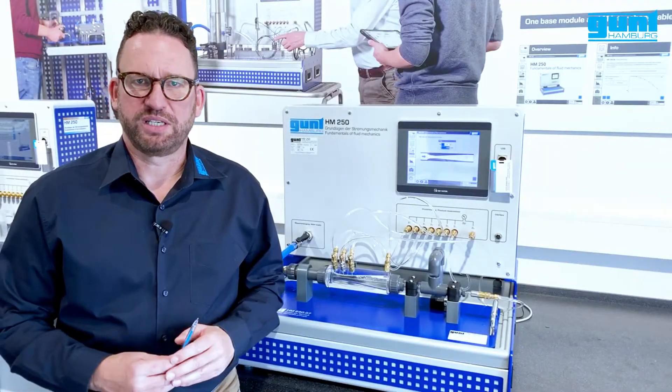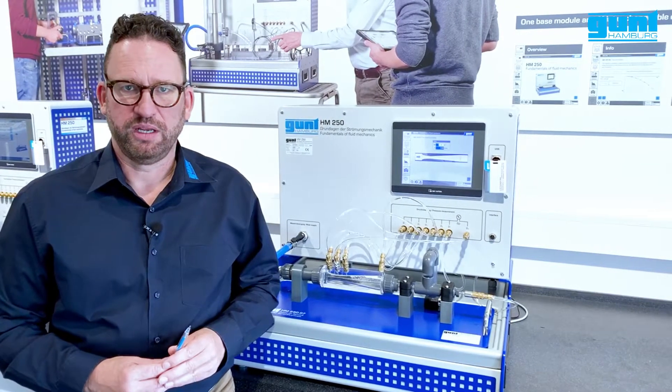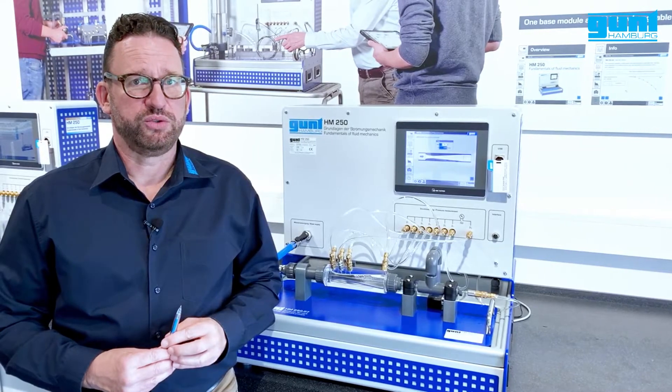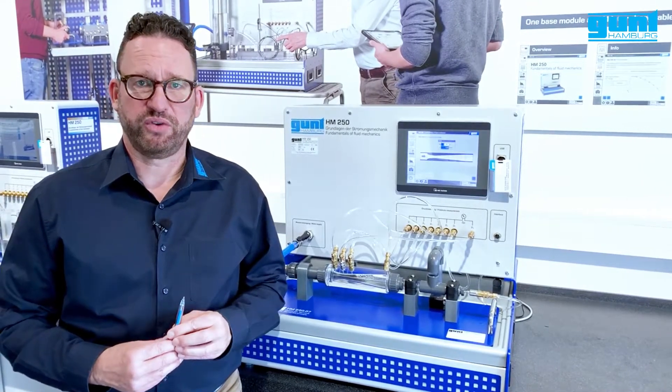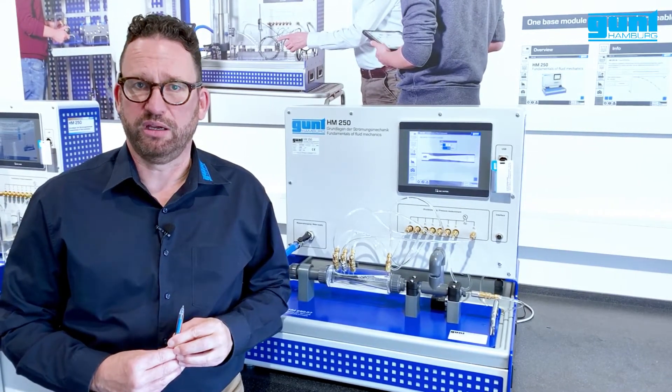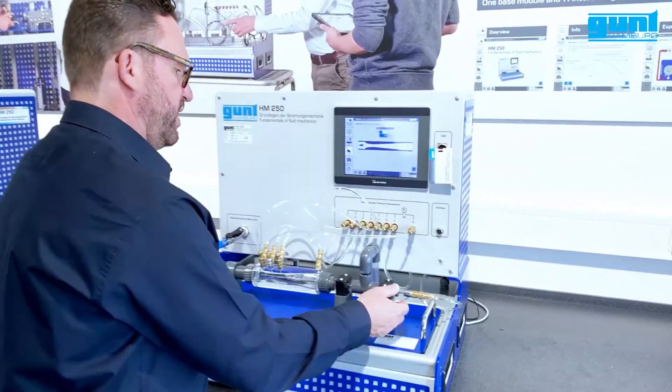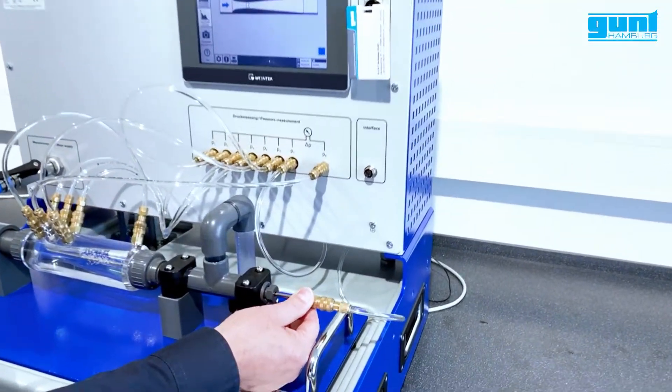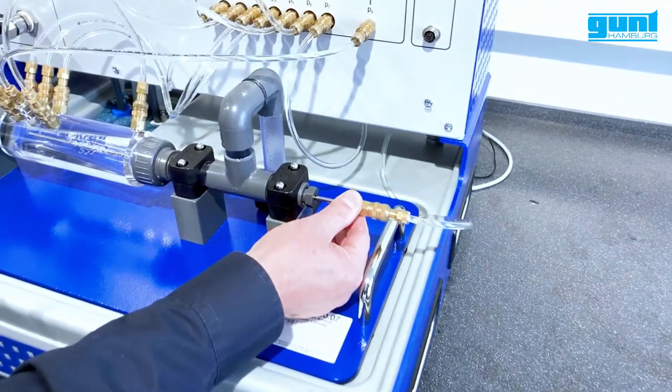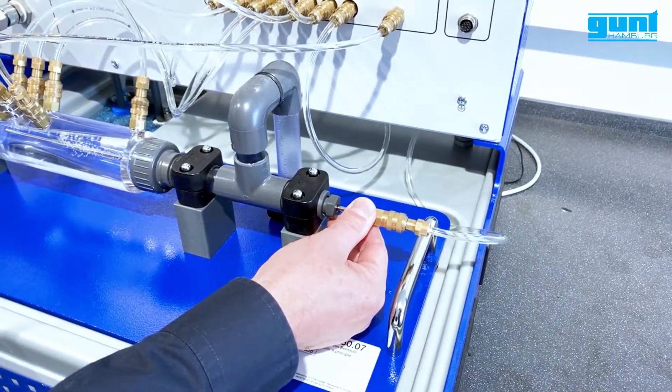After the unit has been set up, we can start the experiment. The learning objective is to demonstrate how energy can be transferred from one form to another. For this, we measure the total pressure inside the Venturi nozzle with this movable pitot tube.